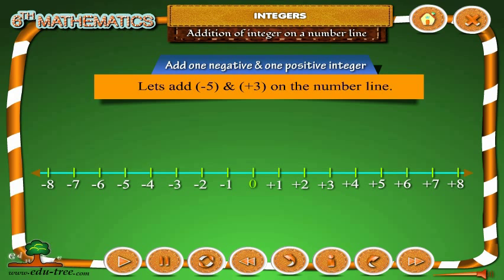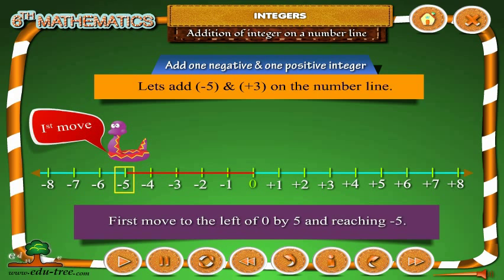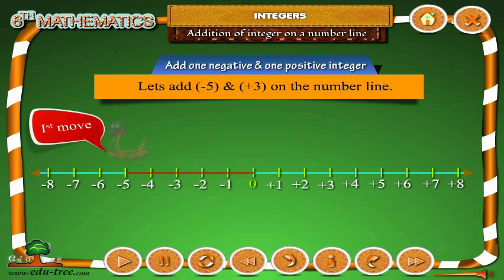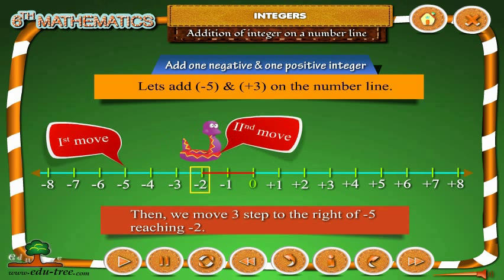Now let us add 1 negative and 1 positive integer. Let us add minus 5 and plus 3 on the number line. First, move to the left of 0 by 5 steps, reaching minus 5. Then we move 3 steps to the right of minus 5, reaching minus 2.